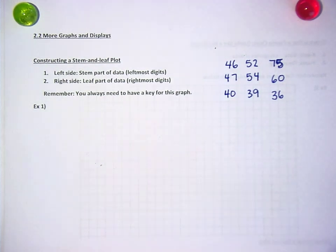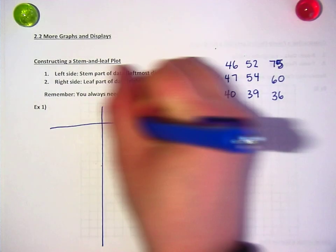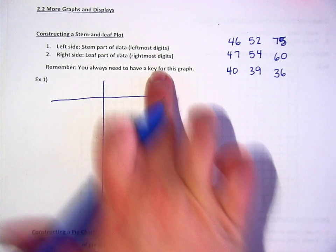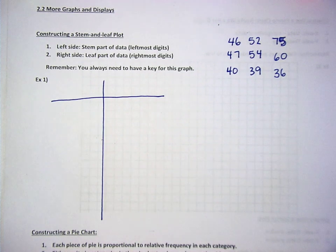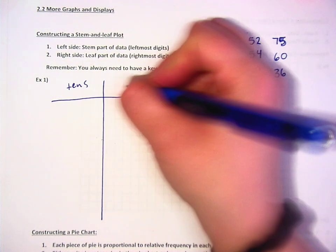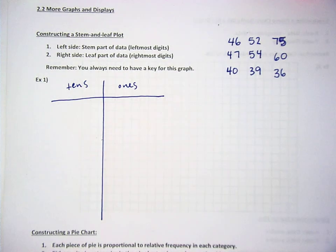So, a stem and leaf plot looks like this. I've got a line down the middle and a line going across kind of like a cross, but one that has the cross part way too high. The stem part of the data, which is the left side is the left most digit of what you're writing. So on this one, it'll be the tens over here and the ones over here.